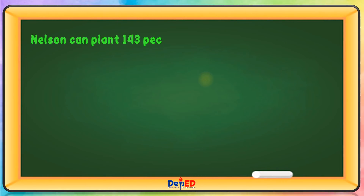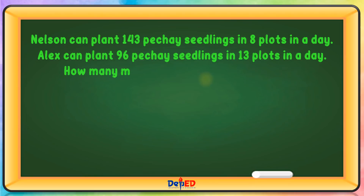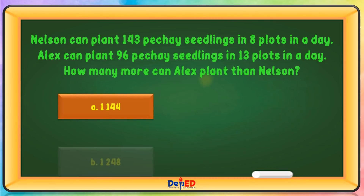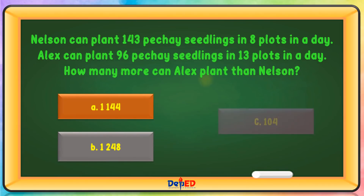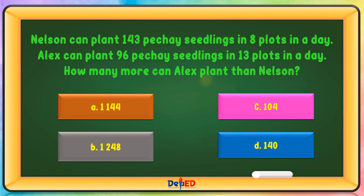Nelson can plant 143 petchi seedlings in 8 plots in a day. Alex can plant 96 petchi seedlings in 13 plots in a day. How many more can Alex plant than Nelson? A. 1,144  B. 1,248  C. 104  D. (option D). The correct answer is C.